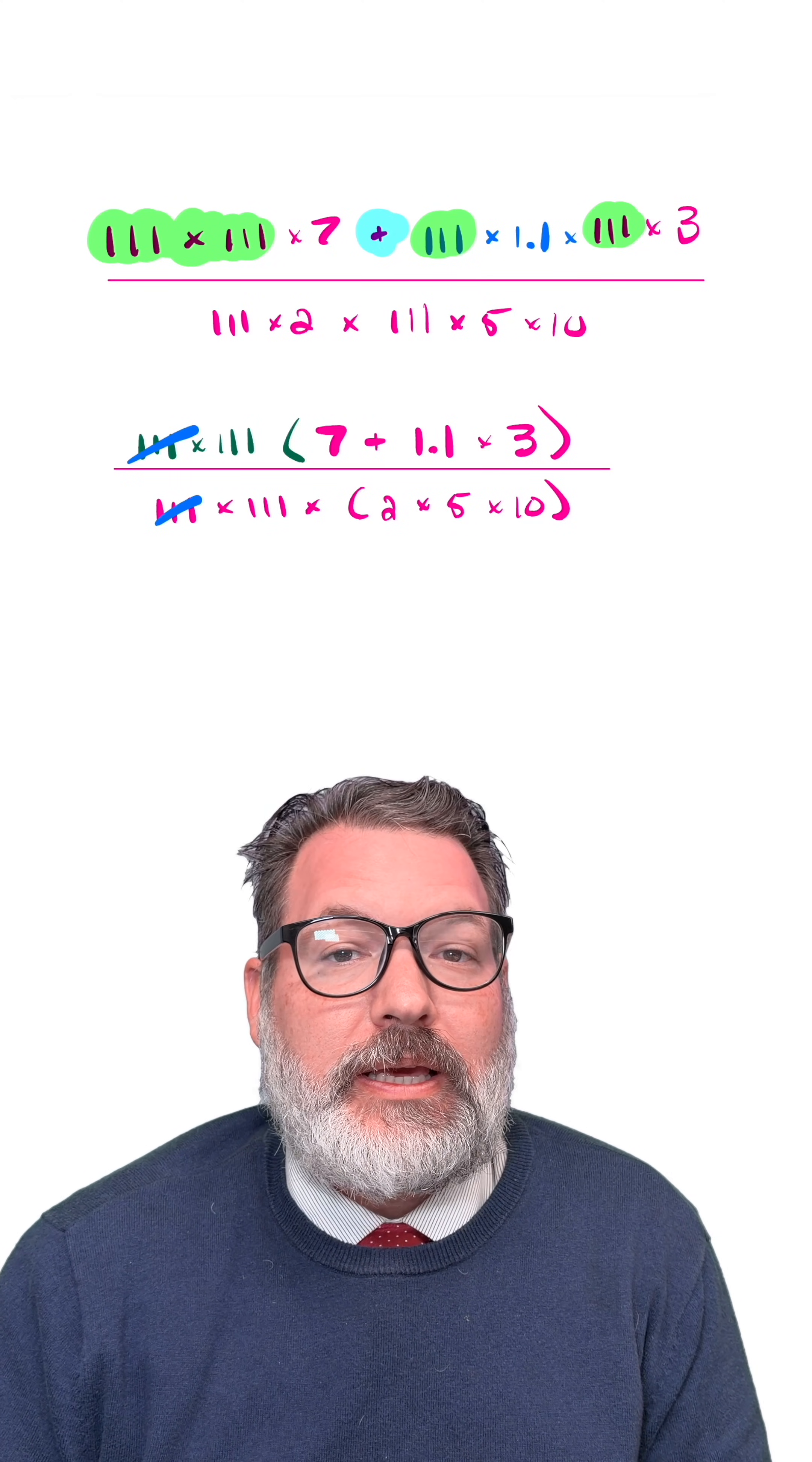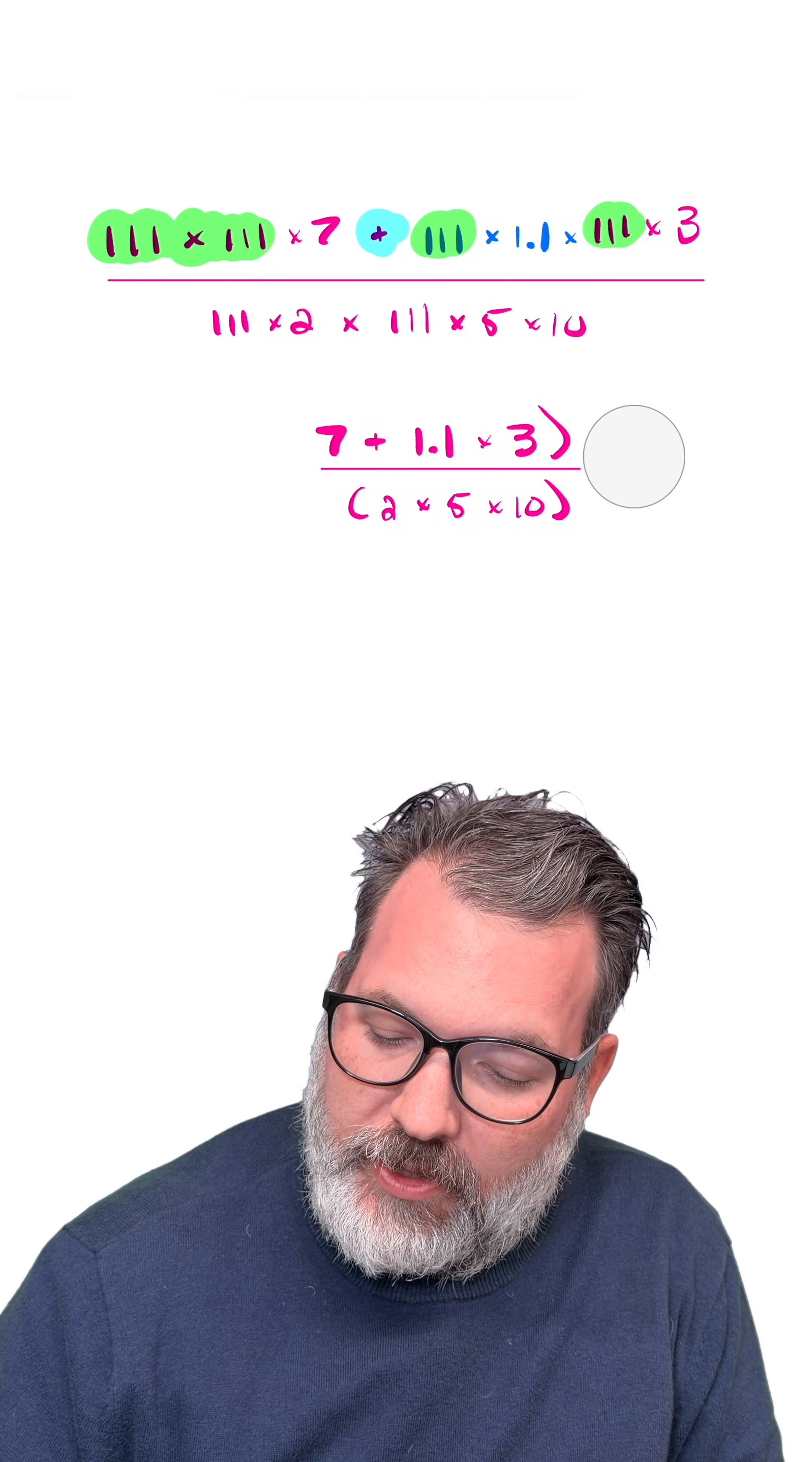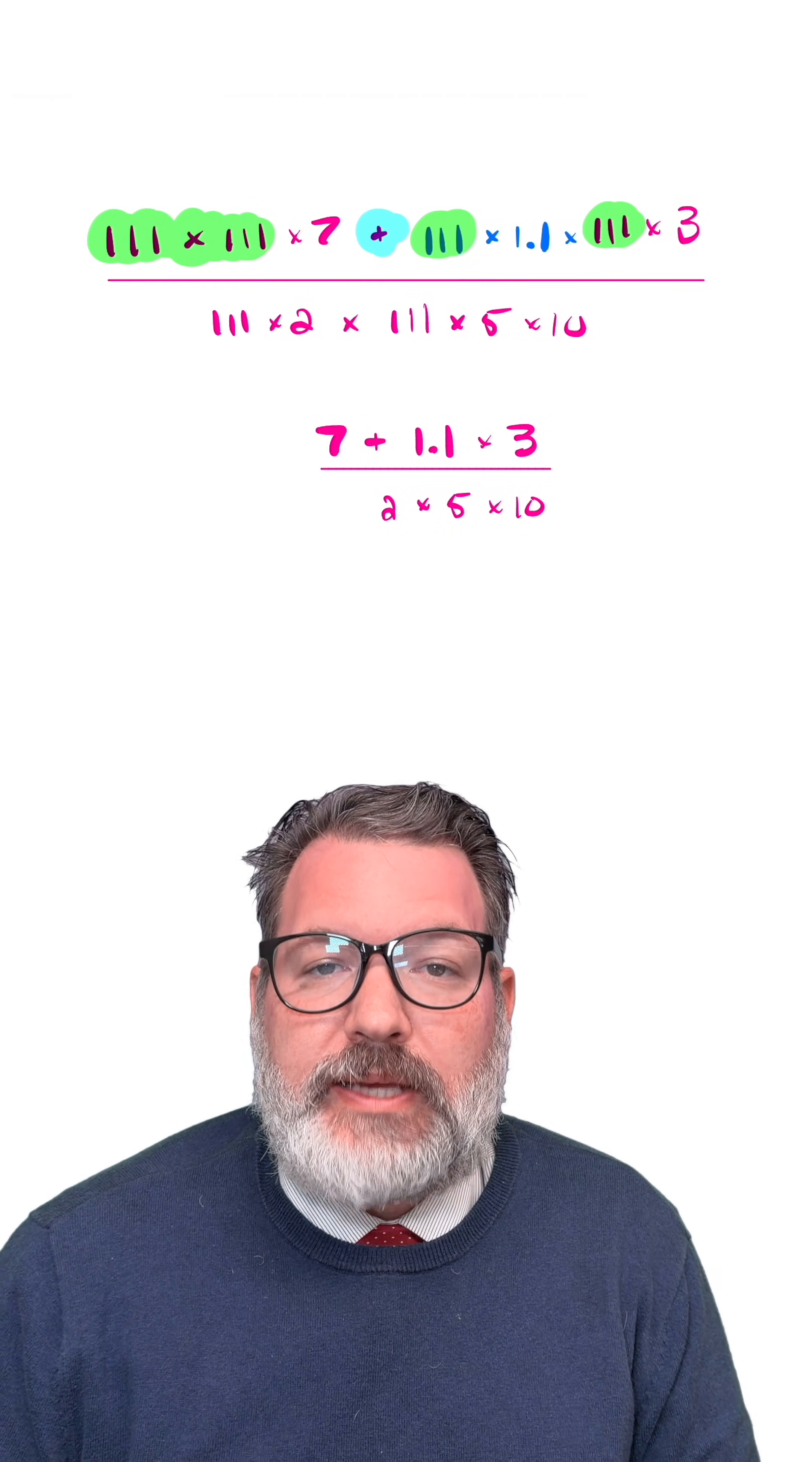So that means we can essentially ignore the 111 over 111. With those taken care of, we can see that essentially the calculation we're left over with is that 7 plus 1.1 times 3 divided by 2 times 5 times 10.